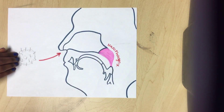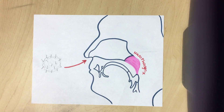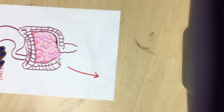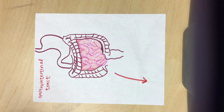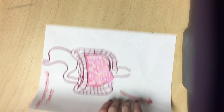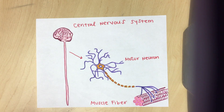Polio enters through the mouth and nose, and the virus reproduces in the mucosal surfaces of the nasal pharynx. The virus makes its way to the gastrointestinal tract, where it invades special cells in the intestines. The virus then, having replicated further, travels in the bloodstream, invades the central nervous system, and spreads to nerve fibers.